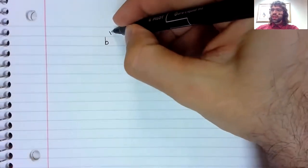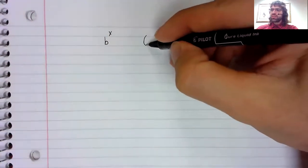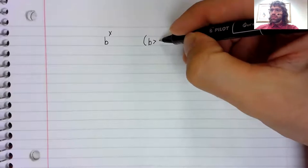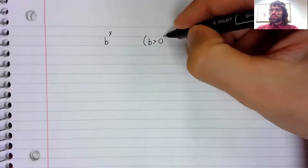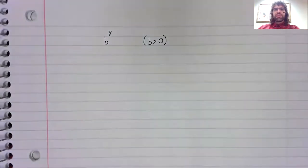Suppose that we have b to the power of x, and when we have exponential functions, that base is always assumed to be positive.